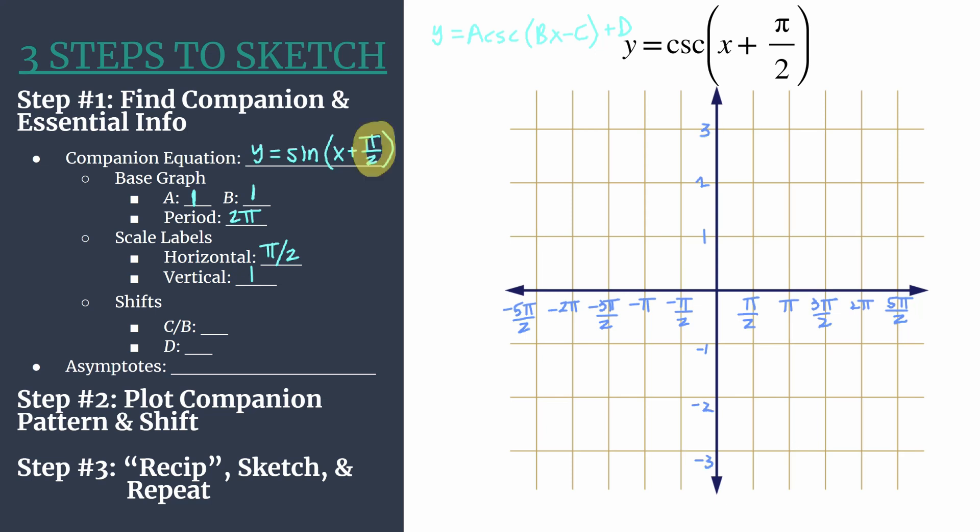Now back over to step one and our analysis, we're ready to talk about our shifts. So notice that our shifts are C over B, those are your horizontal or phase shifts, and D, which we don't actually have a D term here, but D would be a vertical shift. We do want to be a little bit careful in identifying our C term here. Notice that we have a plus sign within the parentheses, but our general form is always BX minus C. So really in your mind, you should be thinking about this as X minus negative pi over two. So your C term is negative pi over two. That's important, knowing that we will shift to the left for our phase shift or our horizontal shift.